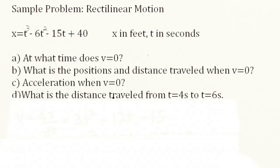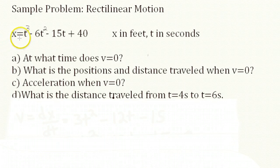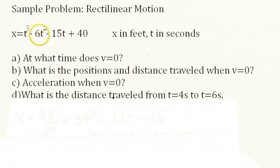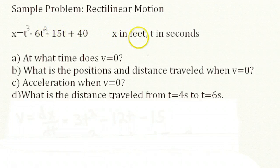Let's look at a sample problem in rectilinear motion. Here, x, the position of a particle, is described by this equation. Its position as a function of time is equal to t cubed minus 6t squared minus 15t plus 40, where x will be in feet and t will be in seconds.